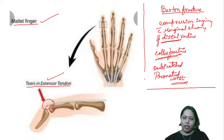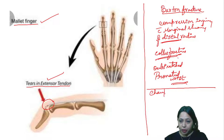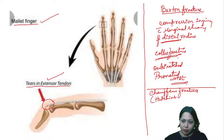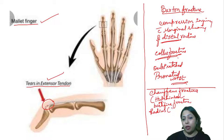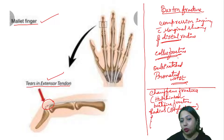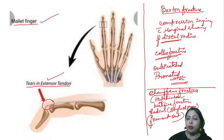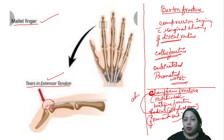Chauffeur's fracture — also called Hutchinson fracture or backfire fracture — involves damage to the radial styloid process. The fragment of the styloid process chips off. Remember: Chauffeur's fracture is the styloid process just getting chipped off.